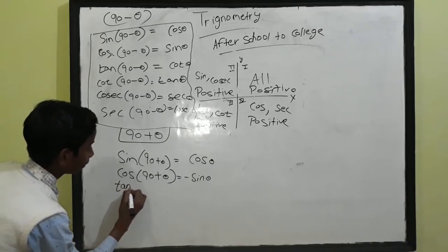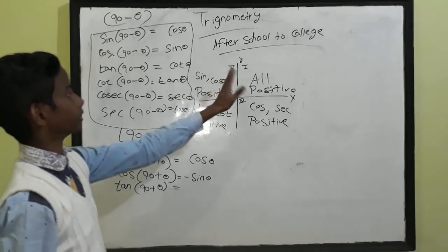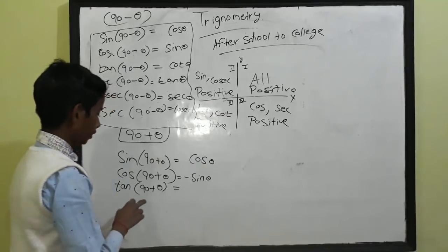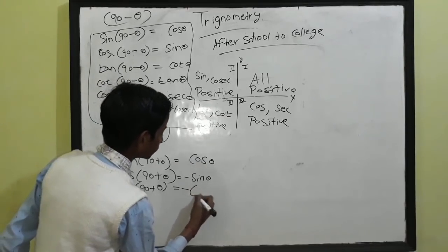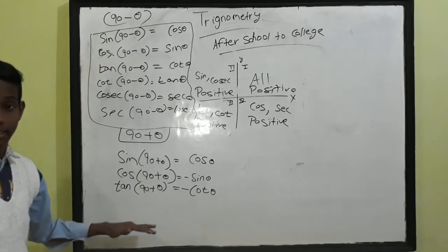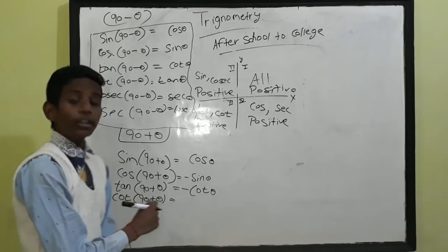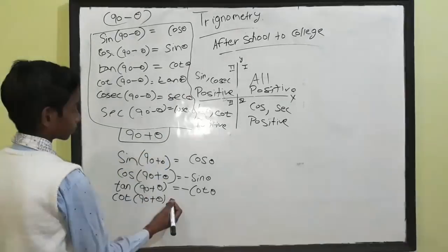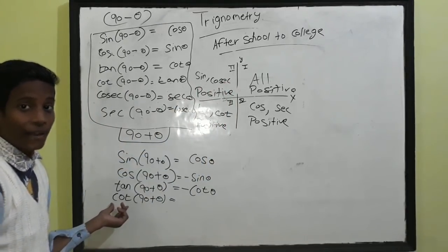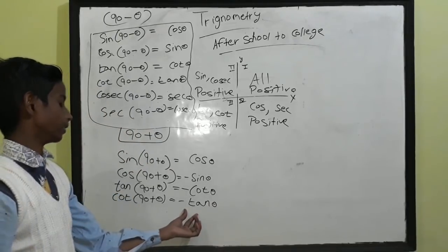Let's see the third one: tan(90 + θ). It's also coming in the second quadrant. Only sin and cosec are positive, so tan is negative. The answer is tan(90 + θ) = −cot θ. Now cot(90 + θ) — it's also coming in the second quadrant. Cot is also negative because only sin and cosec are positive. So cot(90 + θ) = −tan θ.